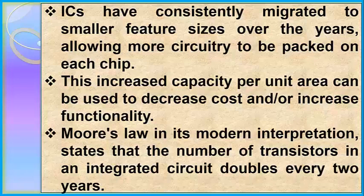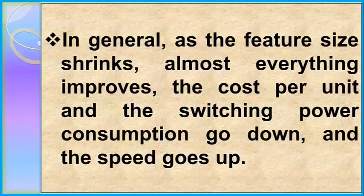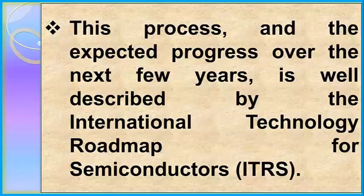Moore's Law in its modern interpretation states that the number of transistors in an integrated circuit doubles every two years. In general, as the feature size shrinks, almost everything improves — the cost per unit and switching power consumption go down, and the speed goes up. However, ICs with nanometer-scale devices are not without their problems, principal among which is leakage current, although these problems will likely be solved or ameliorated by the introduction of high-k dielectrics. Since speed and power consumption gains are apparent to the end user, there is fierce competition among manufacturers to use finer geometries, a process described by the International Technology Roadmap for Semiconductors (ITRS).